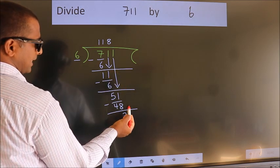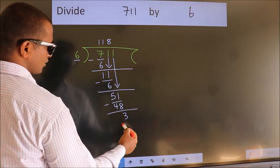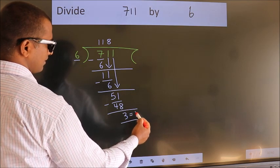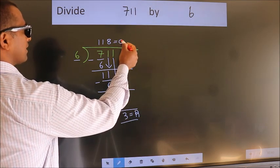No more numbers to bring it down. So, we stop here. This is our remainder. This is our quotient.